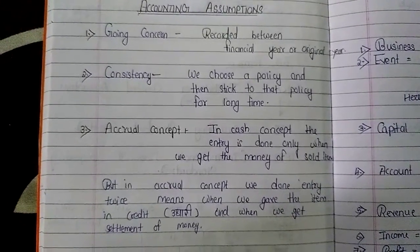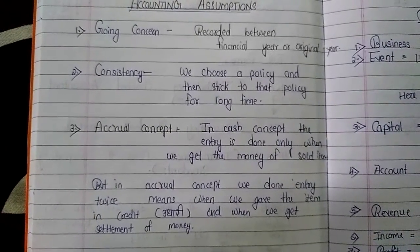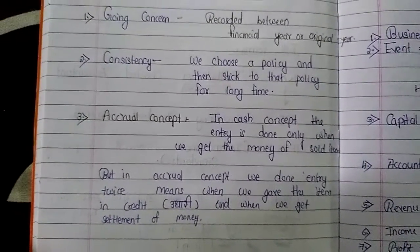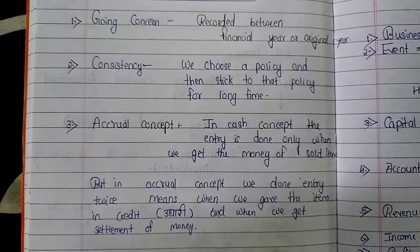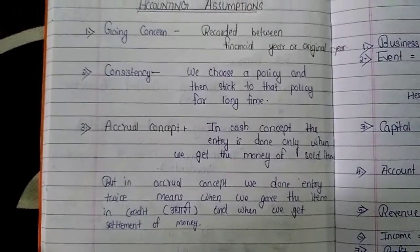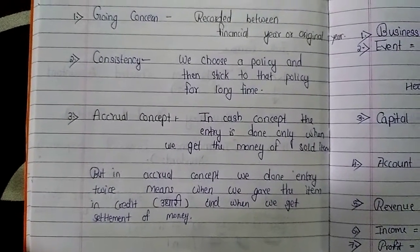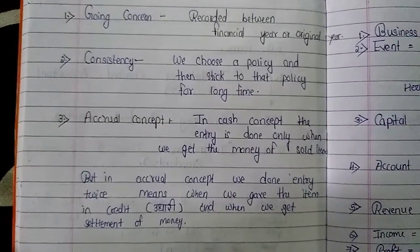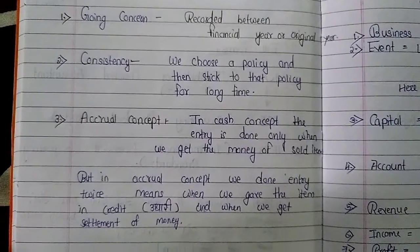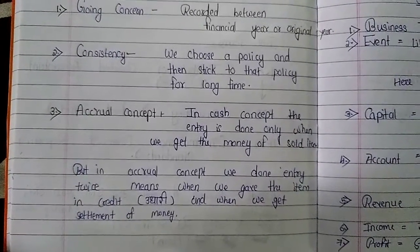Now, accounting assumptions. The first is going concern, which means accounts are recorded within a financial year or calendar year. The financial year runs from 1st April to 31st March, and the calendar year from 1st January to 31st December. The second assumption is consistency — we choose a policy and stick to it for a long time; we don't change our accounting policy every year.